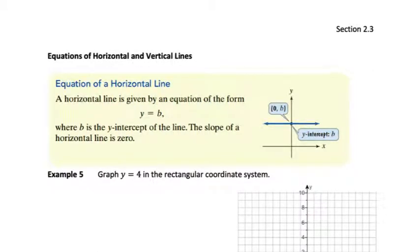In this video for section 2.3, we're going to start by talking about horizontal and vertical lines. A horizontal line has an equation of the form y equals b. This should make sense because we talked earlier about how the slope of a horizontal line is zero.